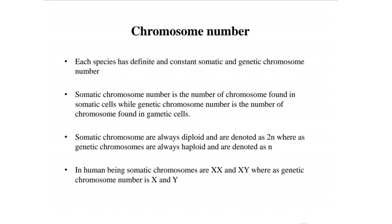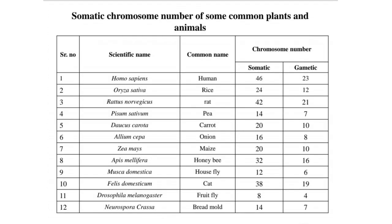In human beings, somatic chromosomes are XX and XY, whereas gametic chromosomes are X and Y. Here are somatic and gametic chromosome numbers for some plant and animal species, shown with their common names.